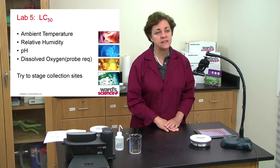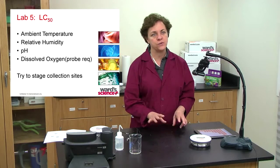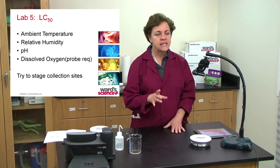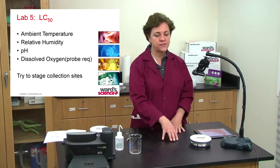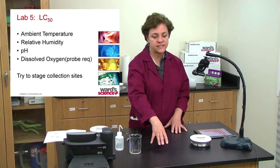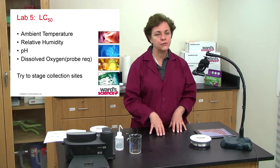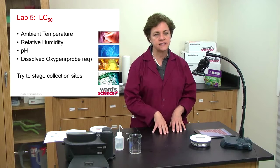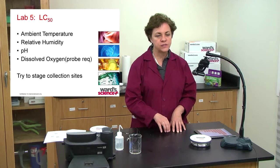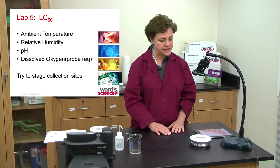As an extension, you can introduce an unknown poison — a weak acid or whatever you choose — and stage different collection sites around the classroom representing the source and mouth of a river. Students test at each site and determine where the pollution was introduced, how far from the source the concentration finally became diluted enough, and do analysis that way.